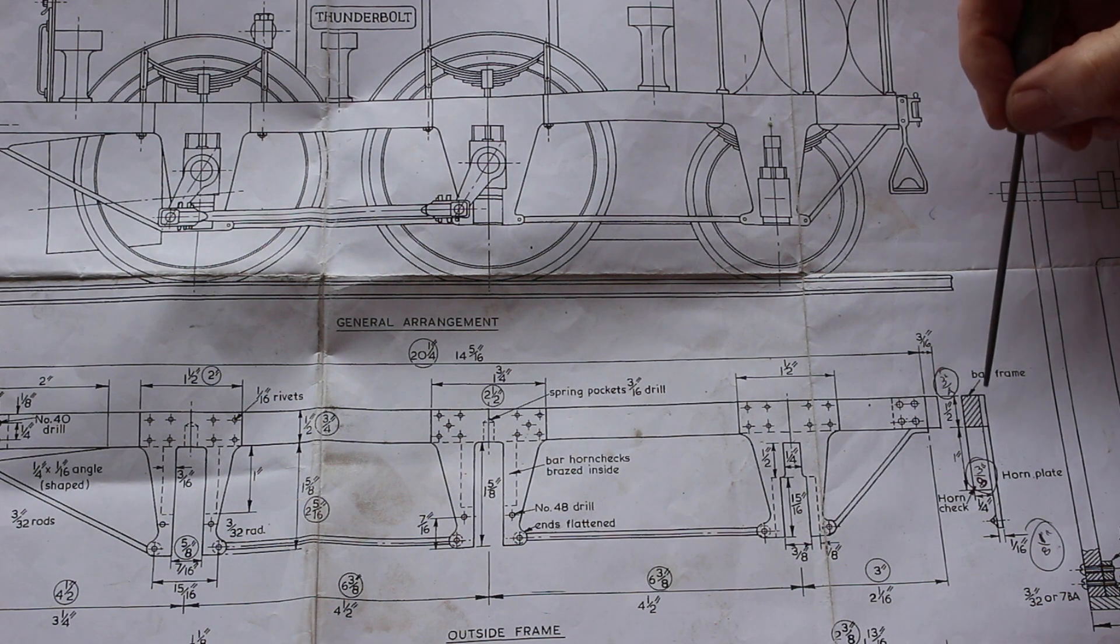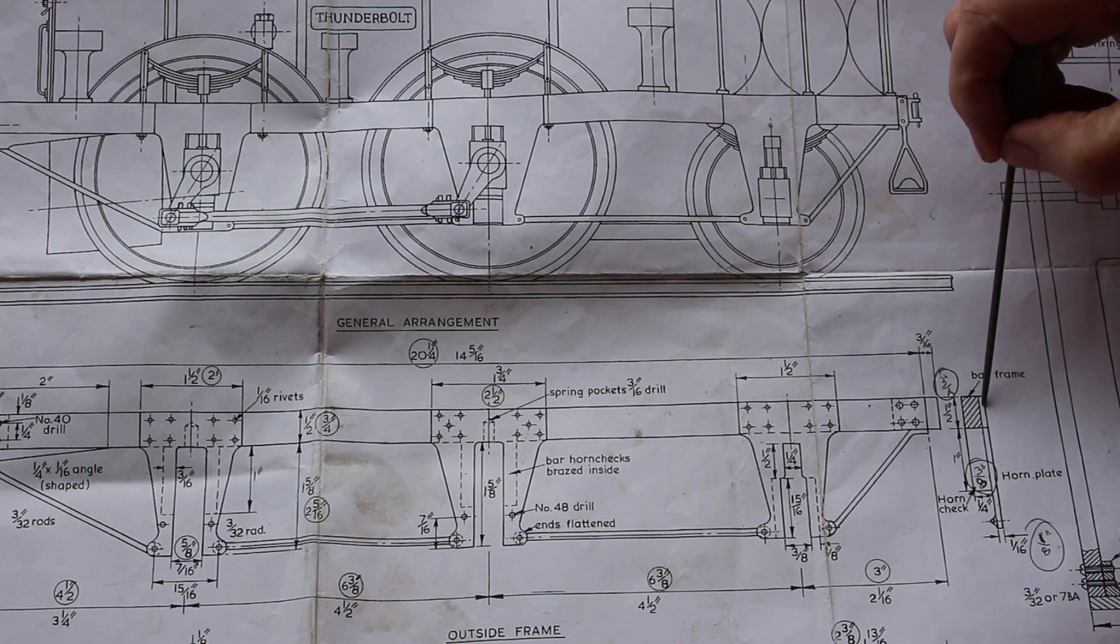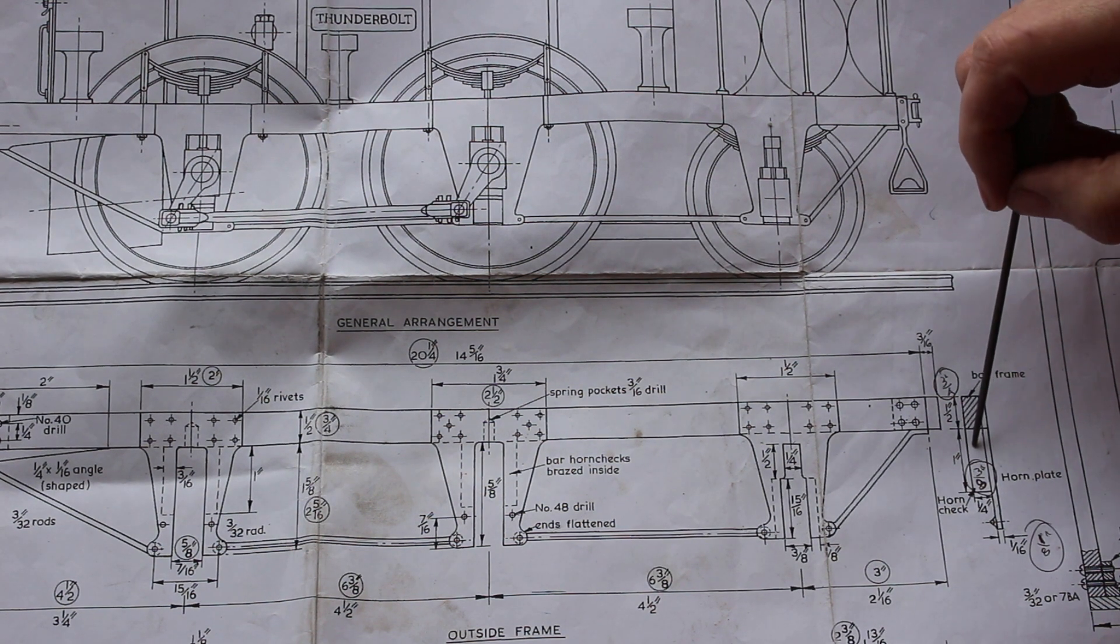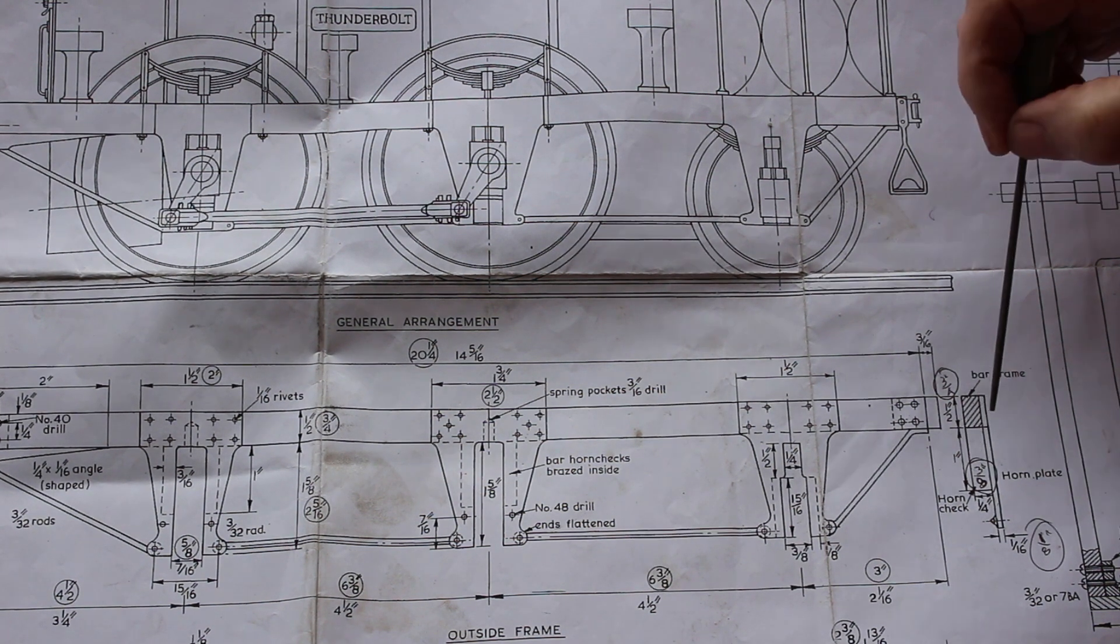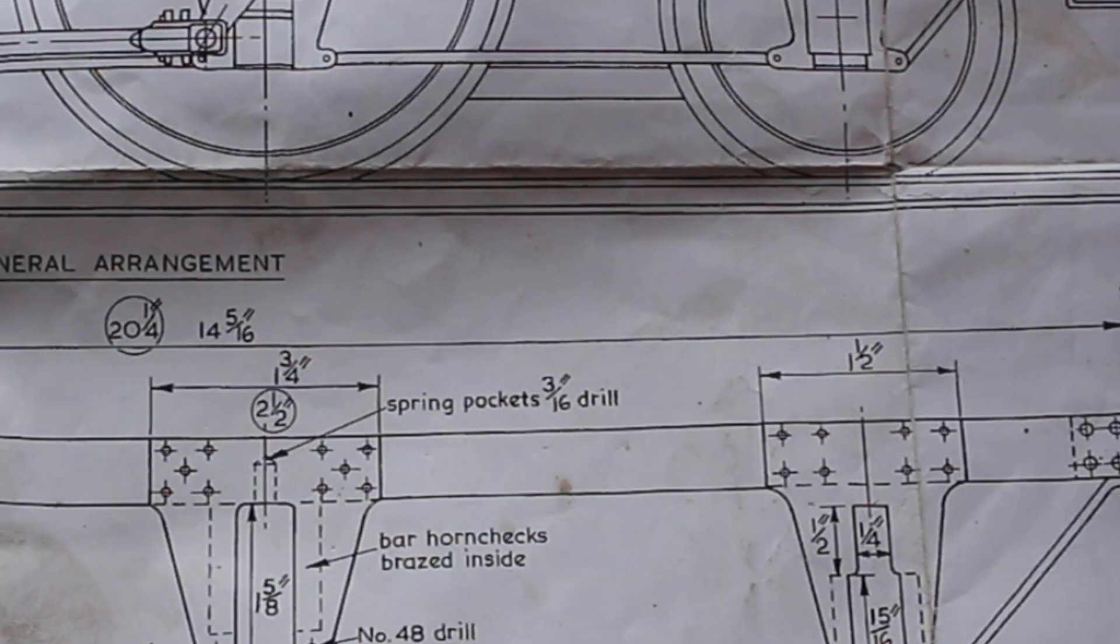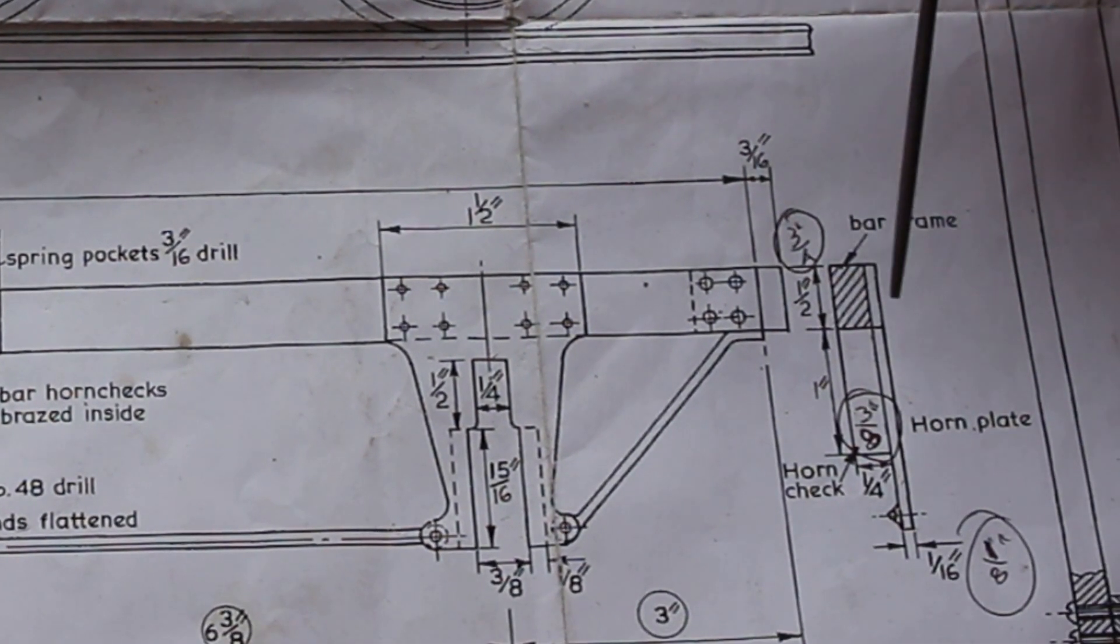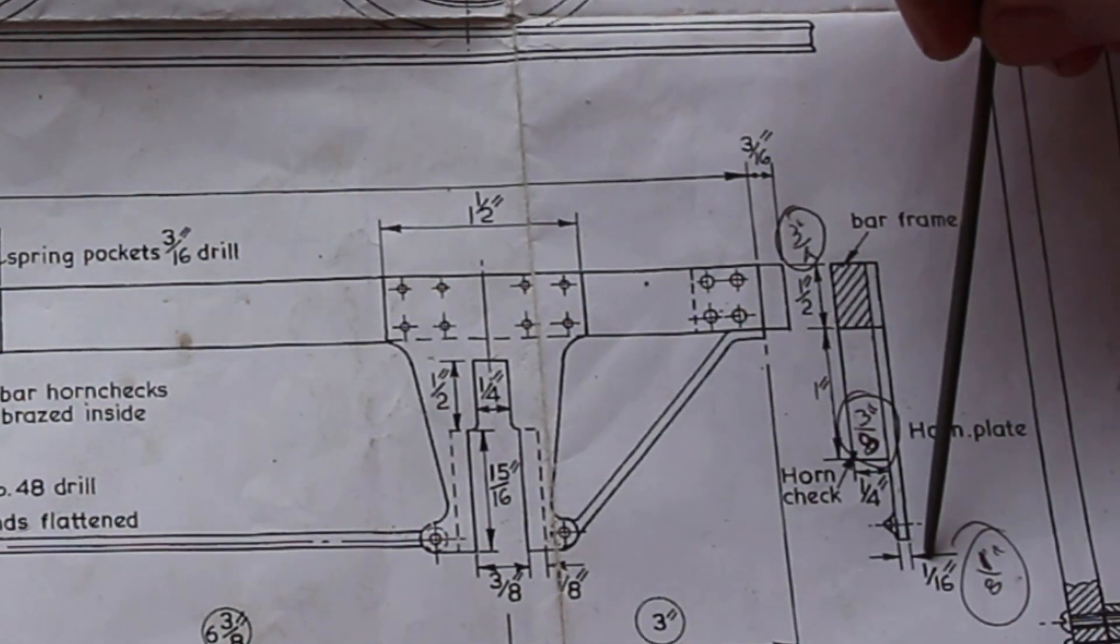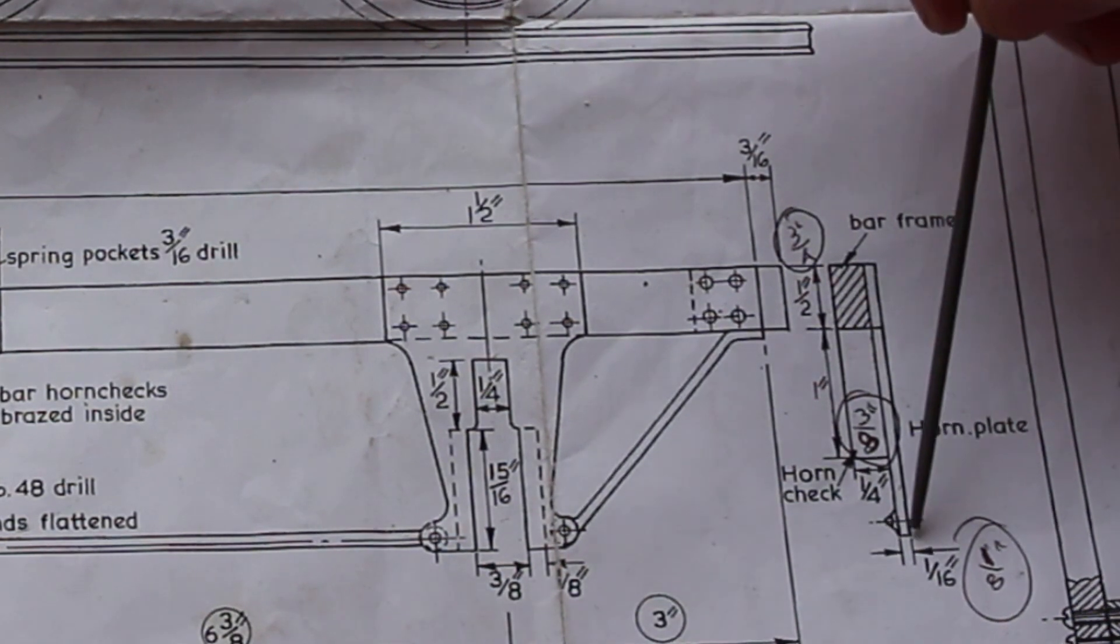The drawing shows the horn plate attached to the outside of the frame with the horn cheek in place to make up the space for the axle boxes. For a five inch gauge model these horn plates are shown at eighth of an inch. The one sixteenth of an inch on the drawing here is for the three and a half inch gauge model.